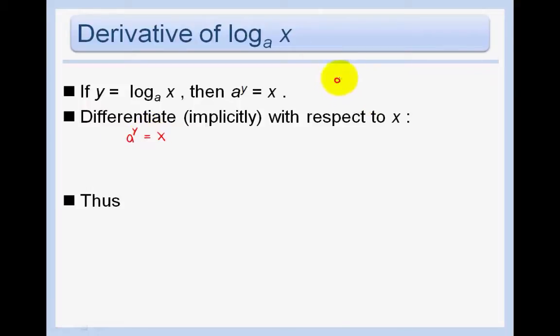Remember that we memorized the derivative of a to the x was a to the x ln a. So we're going to use that. The derivative of a to the y would thus be a to the y ln a times y prime. Don't forget to chain. That's the baby. And then the derivative of x is just 1.